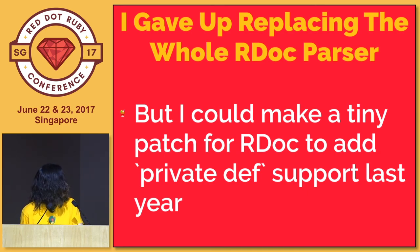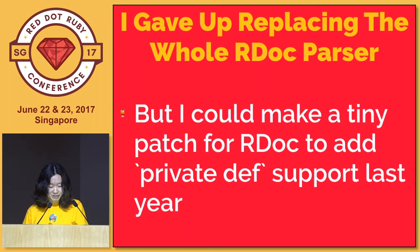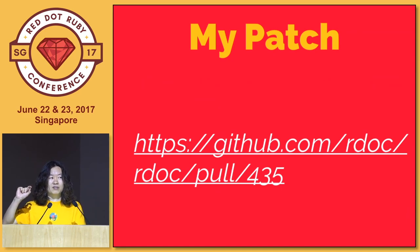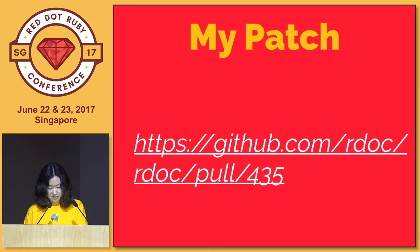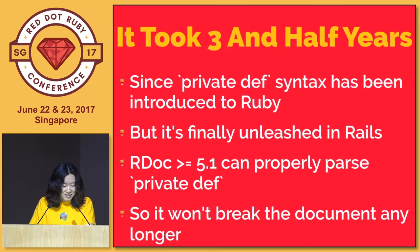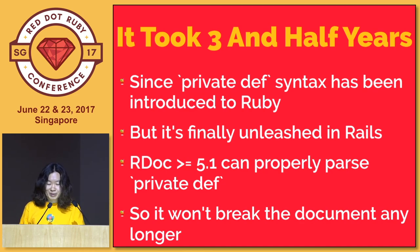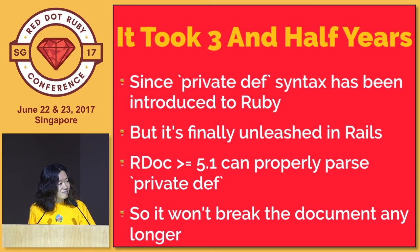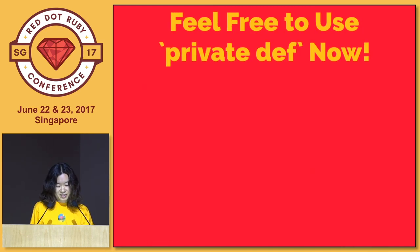I said I gave up replacing the RDoc parser, so instead I made a tiny patch resolving my problem for Rails. This patch enables correctly parsing private_def in RDoc without replacing the whole parser. This happened last year, so it took more than three years to support private_def, allowing Rails committers to use this new syntax. But it's now available because RDoc has been released with my patch, and Rails 5.1 depends on that version. So you're free to use private_def now.